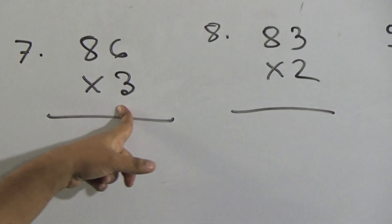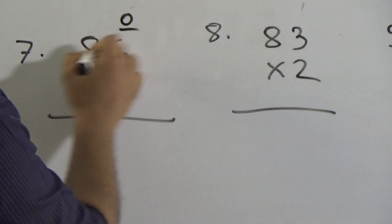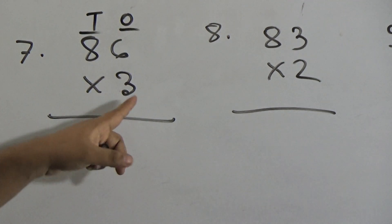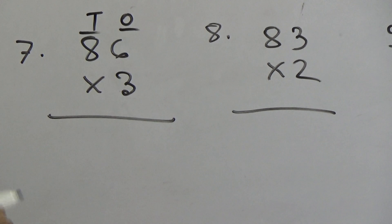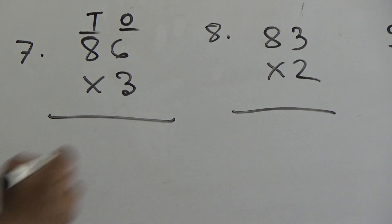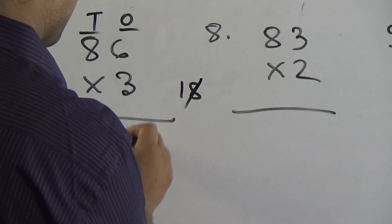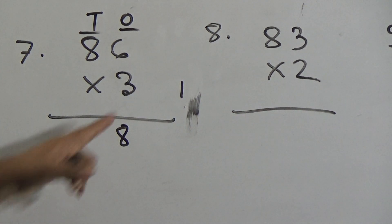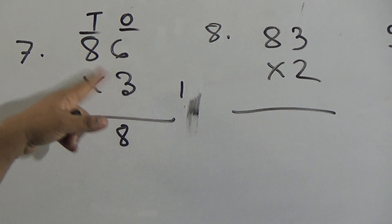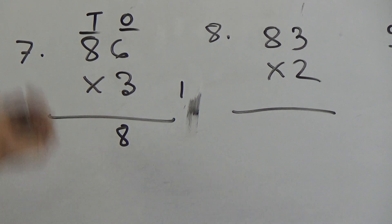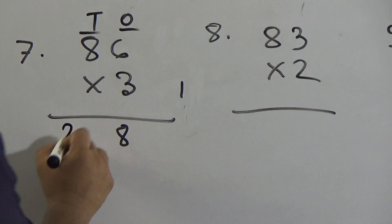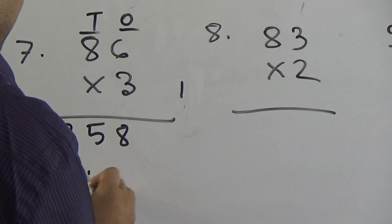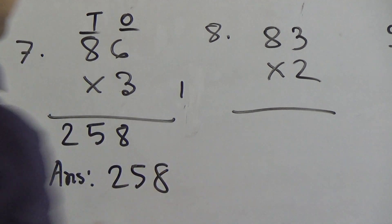Question 7: 86 multiplied by 3. Here 6 is in the ones place and 8 is in the tens place. We multiply 3 with 6 first: 3 ones are 3, 3 twos are 6, 3 threes are 9, 3 fours are 12, 3 fives are 15, 3 sixes are 18. From 18, I write 8 here and carry the 1. Now 3 multiplied by 8: 3 eights are 24, and adding carrying 1 gives 25. So the answer is 258.